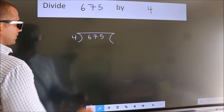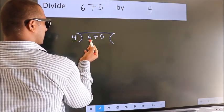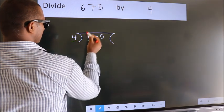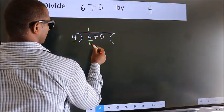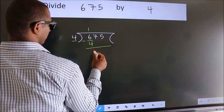Next, here we have 6, here 4. A number close to 6 in the 4 times table is 4. 4 once is 4. Now we subtract and get 2.